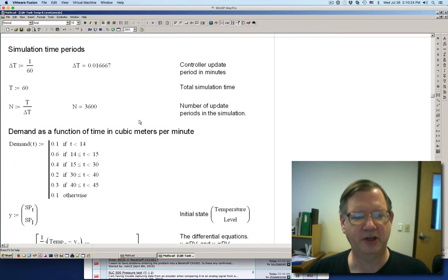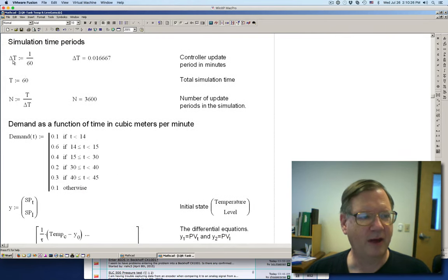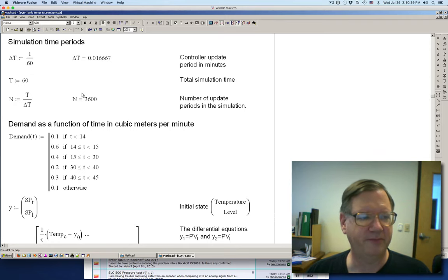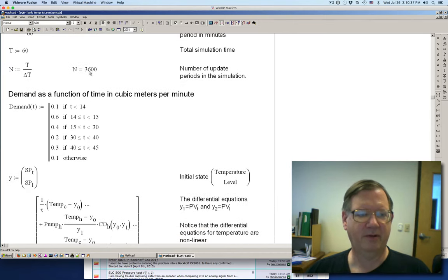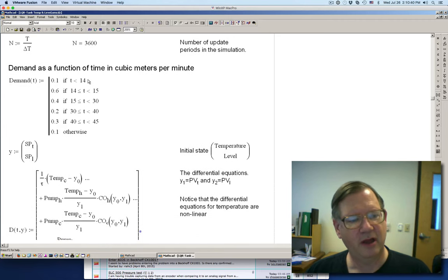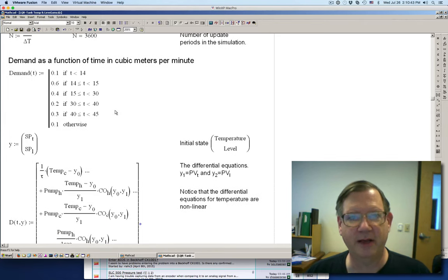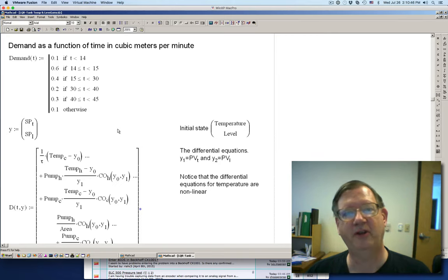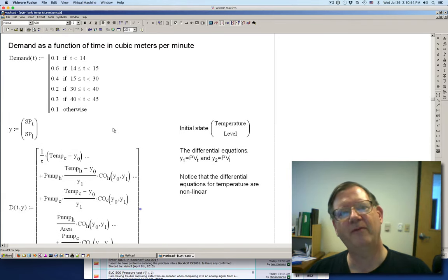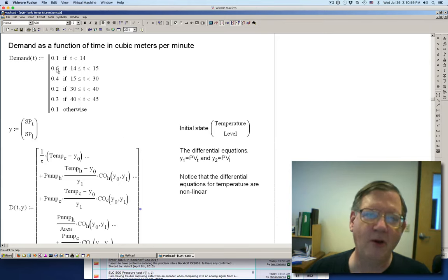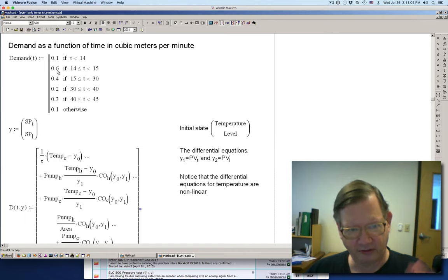So now I'm going to do the simulation. I've got my time in minutes. So I'm simulating every second. I'm going to simulate for, what is it, 60 minutes. And then this is my demand in cubic meters per minute. Now remember, we're trying to get water out of this mixing tank at, well here 0.4 meters per minute and here 0.6.